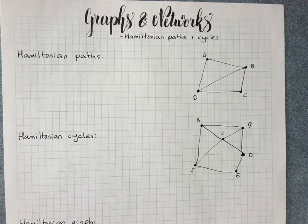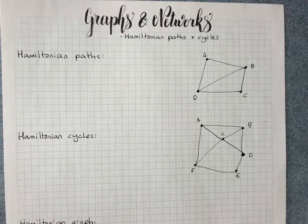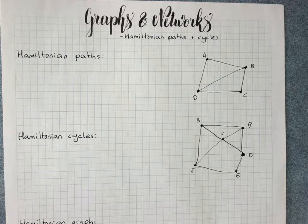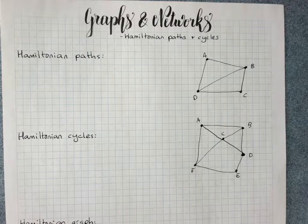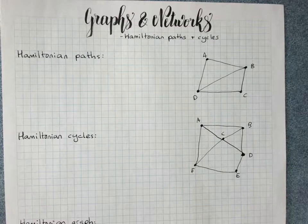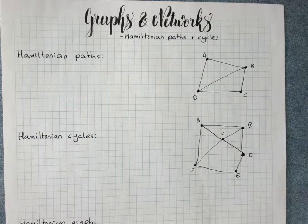Hamiltonian paths and cycles. Previously we learned about Eulerian graphs, where we cover every edge of a graph only once. Hamiltonian paths and cycles involve all the vertices but not necessarily all the edges.